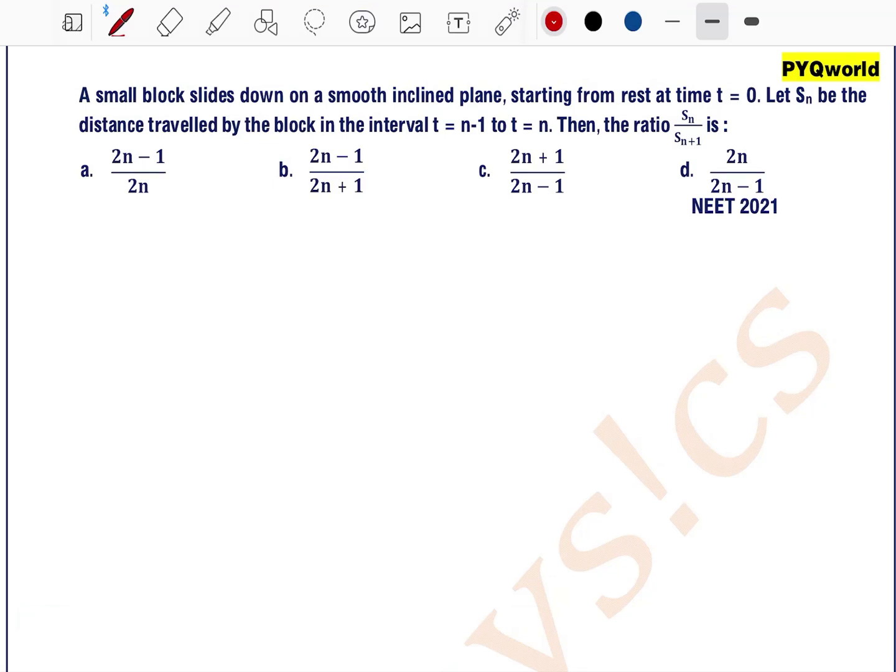A small block slides down on a smooth inclined plane starting from rest at time t equals 0. Let Sn be the distance travelled by the block in the time interval t equals n minus 1 to t equals n. Then the ratio Sn by Sn plus 1 is: